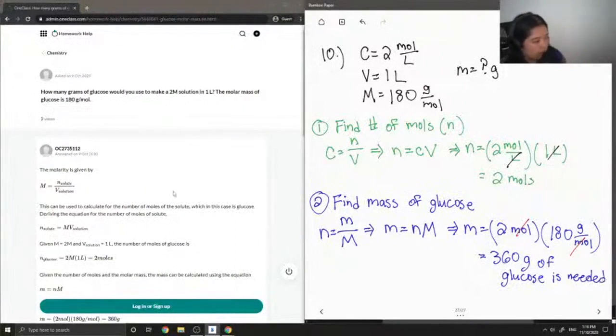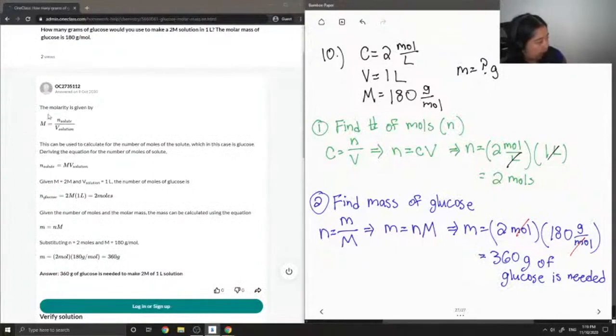Okay, so let's see what our junior tutor said. The molarity is given by M equals number of moles over volume. This can be used to calculate for the number of moles of the solute, which in this case is glucose. Deriving the equation for the number of moles of the solute gives concentration times volume. And they got two moles as well.